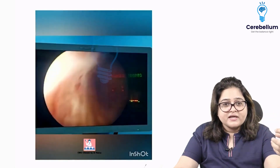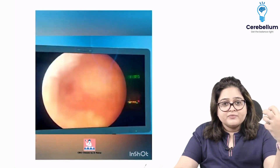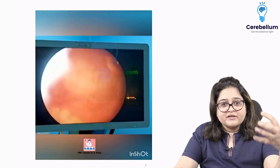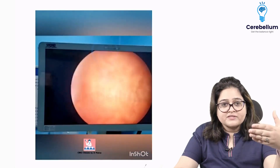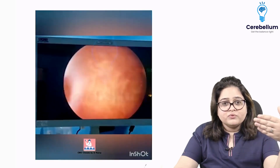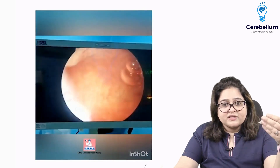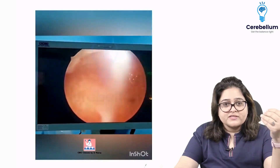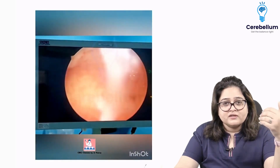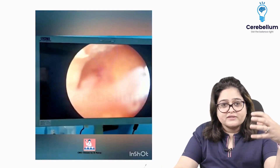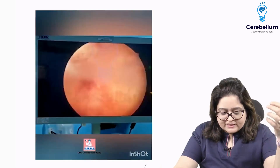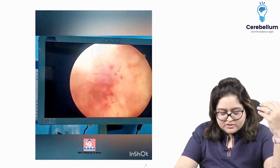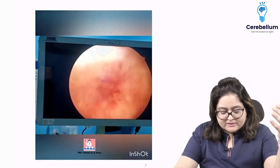Going inside and I'm reaching the fundus — the top. You can see now I'm at the fundus, and if you see on both sides laterally, you can see the ostea through which the tubes originate. That's the tubal ostea of one side, and that's the tubal ostea of the other side.